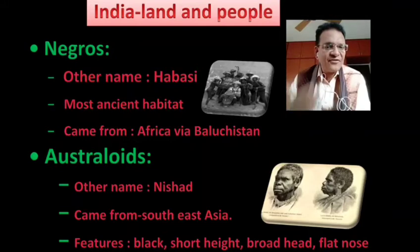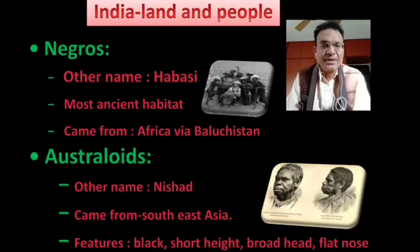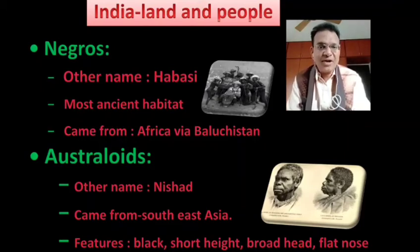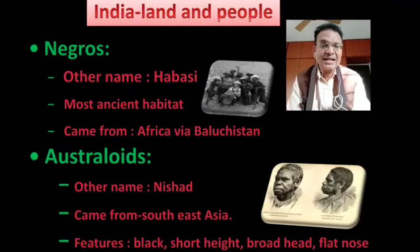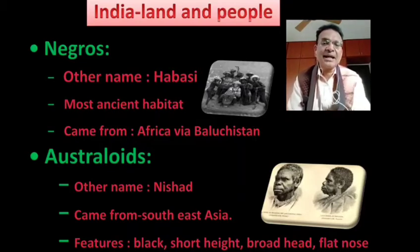Another is the Australoid people. These people came from South East Asia. Their physical features were black skin with broad head, flat nose and short in height. That is why the Aryans were calling them Nisad people. The origins of tribes like Kol, Munda, Khansi, these tribes of Assam and tribes of Nicobar and Myanmar.